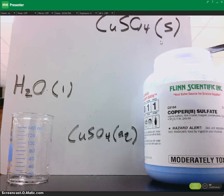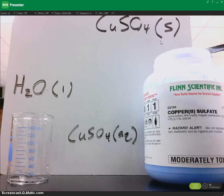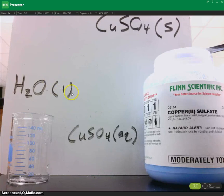The three phases you're probably most familiar with are solid, liquid, and gas. An S indicates that something is solid, an L indicates that the reactant is a liquid, and a G would indicate that it was a gas.